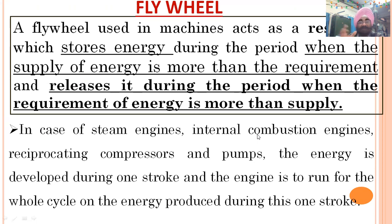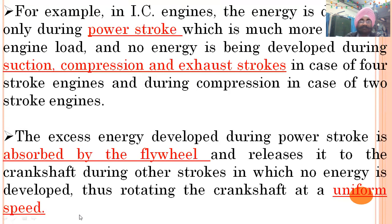For example, in case of steam engines, internal combustion engines, reciprocating compressors, and pumps, the energy is developed during one stroke. The engine is to run for the whole cycle on the energy produced during this one stroke. In IC engines, the energy is developed only during the power stroke, which is much more than the engine load.